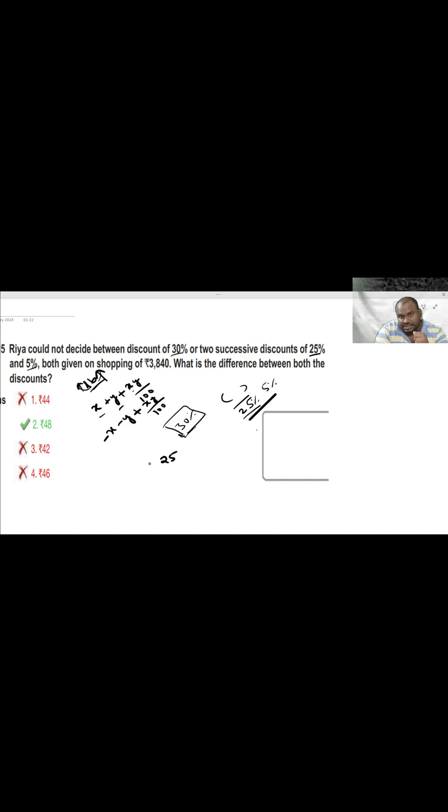So minus 25 minus 5 plus 25 into 5, 125 divided by 100, which is 1.25. So minus 30 plus 1.25. What is the actual other discount? Minus 30. So minus 30 and minus 30, both are same. So what is the major modification she's getting is 1.25. So 1.25 is the extra she's getting.